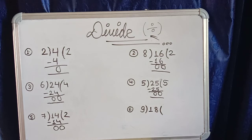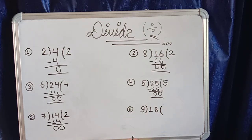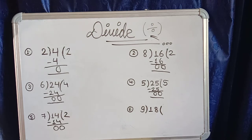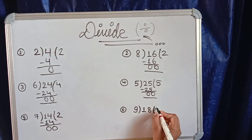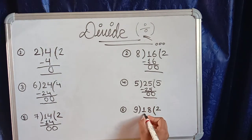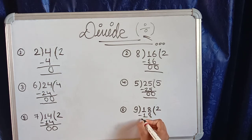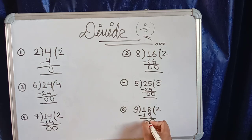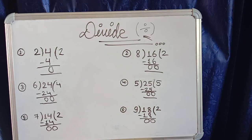Question number six is 9 divided by 18. In the 9 times table we have 18, so the answer is 2. We write it out and minus: 8 minus 8 is zero, 1 minus 1 is zero.